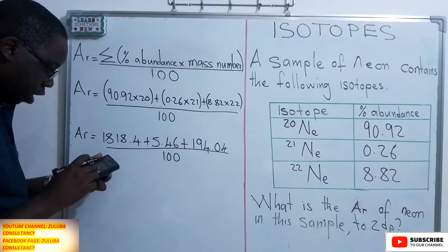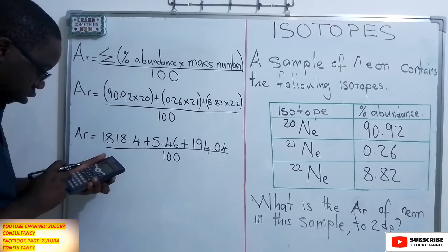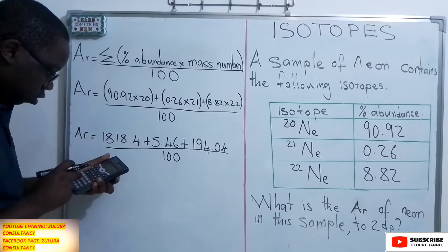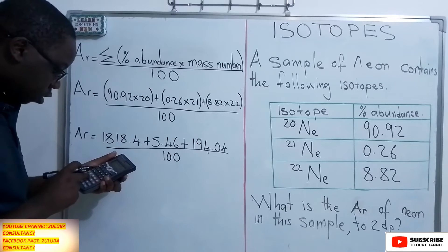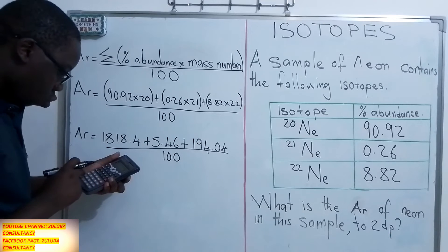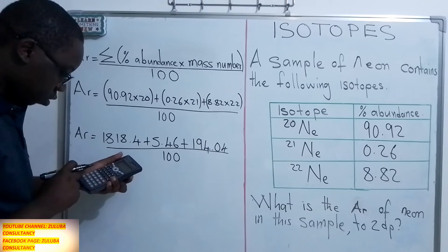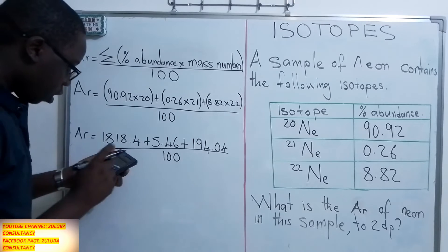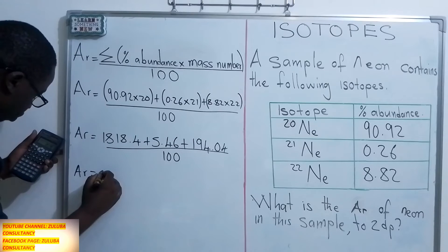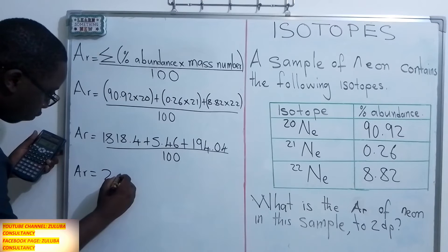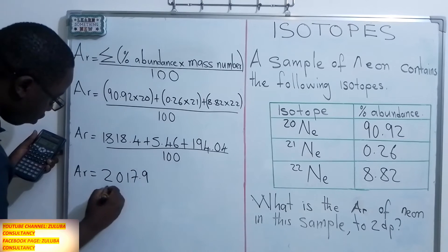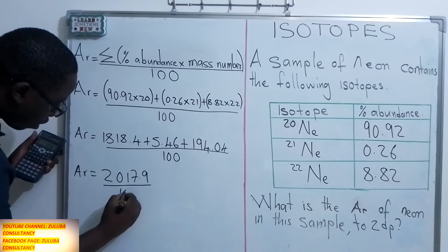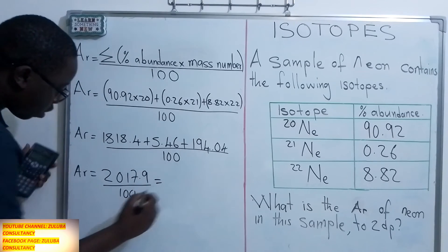So Ar is equal to, let's find 1,818.4 plus 5.46 plus 194.04. Now, it is giving us 2,017.9. So this divided by 100. So when we divide this by 100,